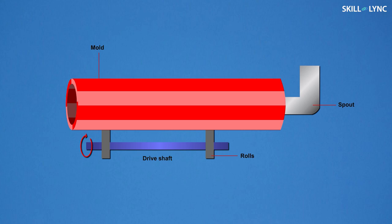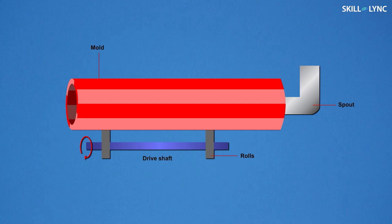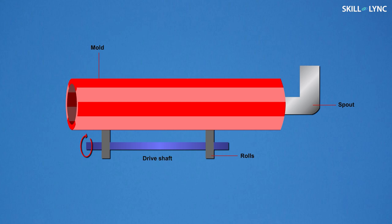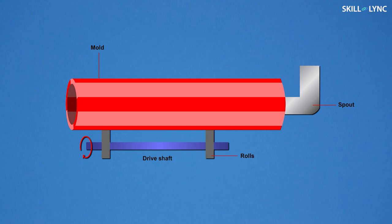In true centrifugal casting, the molten metal is poured into a rotating mold. The axis of this rotation can be horizontal as well as vertical. Steel, iron, or graphite are used for making the mold. A refractory coating can be provided to the mold for increasing the mold life. The surface of the mold can be shaped as per the requirements of the final casting.